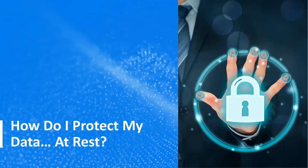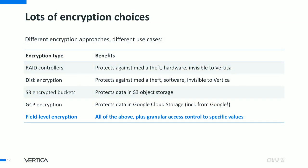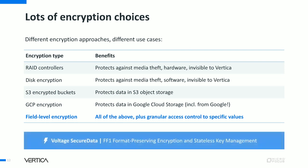We've talked about how to secure your data over the network, but what about when it's on disk? There are several different encryption approaches, each depending on your use case. RAID controllers and disk encryption are mostly for on-prem clusters and protect against media theft — they're invisible to Vertica. S3 and GCP are the equivalent in the cloud, also invisible to Vertica. And then there's field-level encryption, which we accomplish using Voltage Secure Data, which is format-preserving encryption.